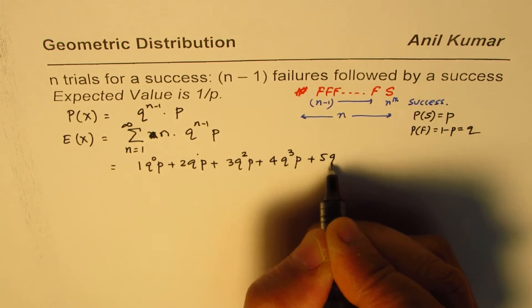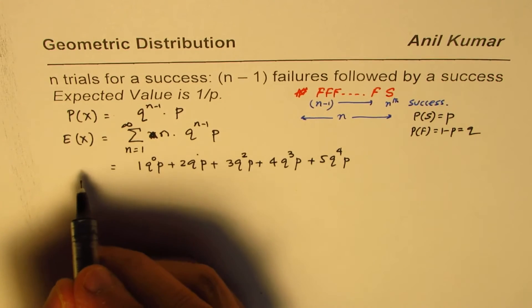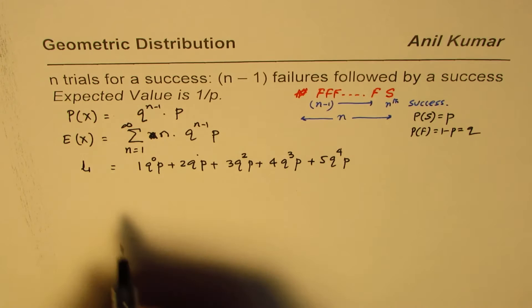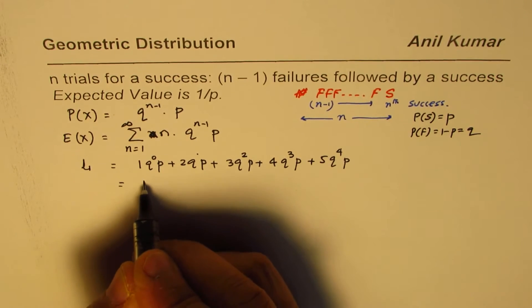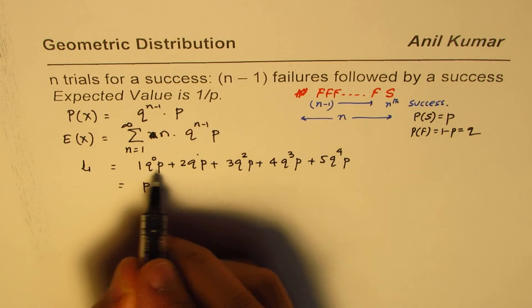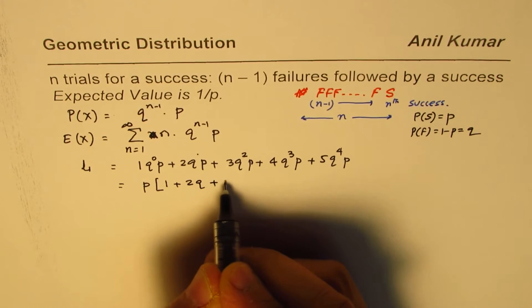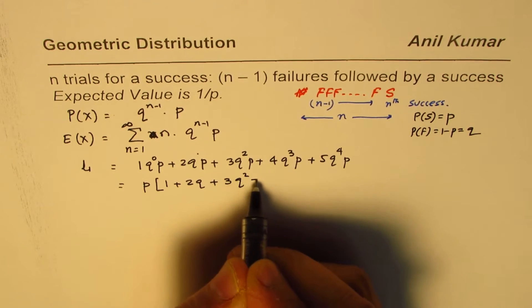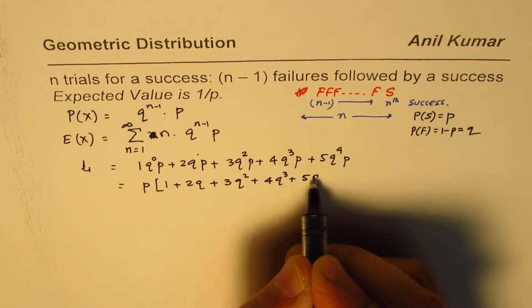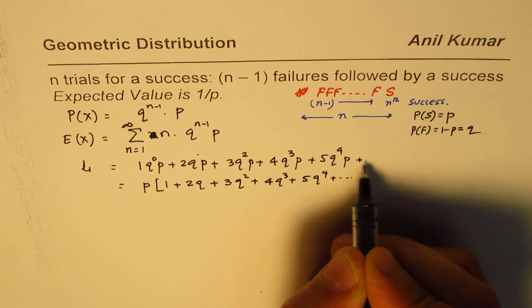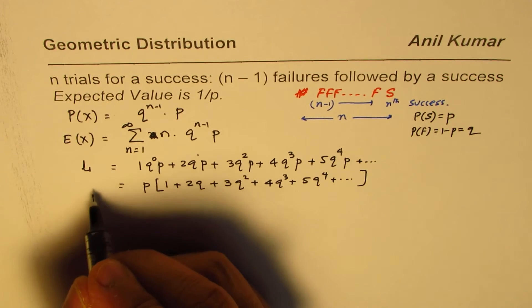Expected value is also the mean, so we can write this as μ. Let's take P common. If I take P common, the first term we get is 1, then we have 2Q plus 3Q square plus 4Q cube plus 5Q to the power of 4, and so on. That's an infinite series.